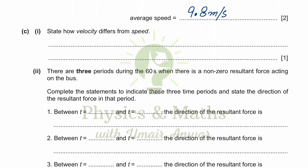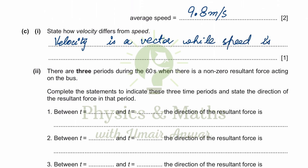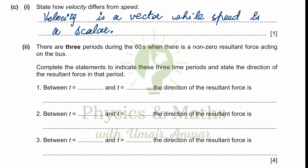The question asks us to state how velocity differs from speed. Velocity is a vector, while speed is a scalar. Scalars do not have any direction; velocity, being a vector, has a direction as well.